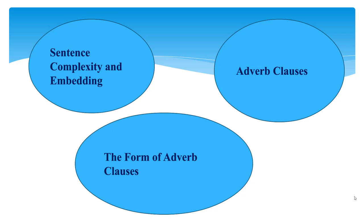Adverb clauses of place include conjunctions such as where, wherever, and everywhere. Note that clauses beginning with whenever, wherever, and everywhere show that something always happens in a place or at a certain time.